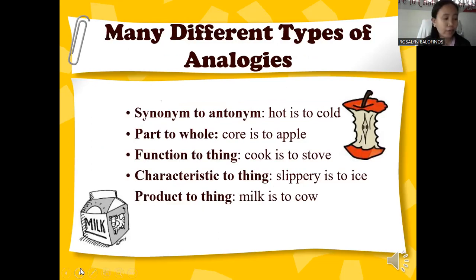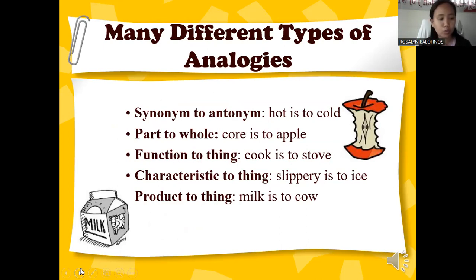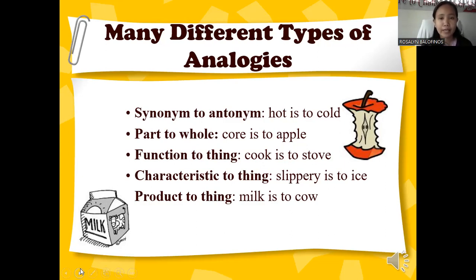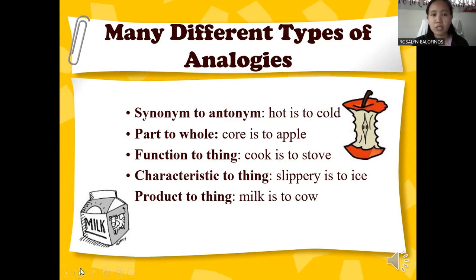There are different types of analogy. We will break it down into five types to make it easier to understand, though you can still refer back to your module to broaden your knowledge. We'll start with synonym and antonym. Synonyms are words that are the same or almost the same in meaning; antonyms are opposite in meaning. For example, 'hot is to cold' is an antonym, and 'big is to large' is a synonym.